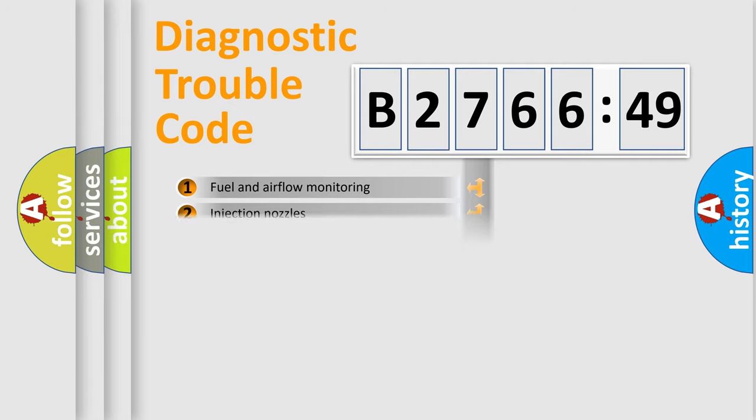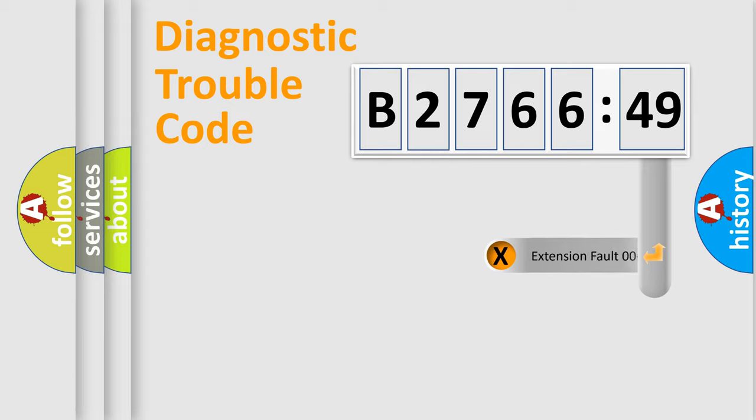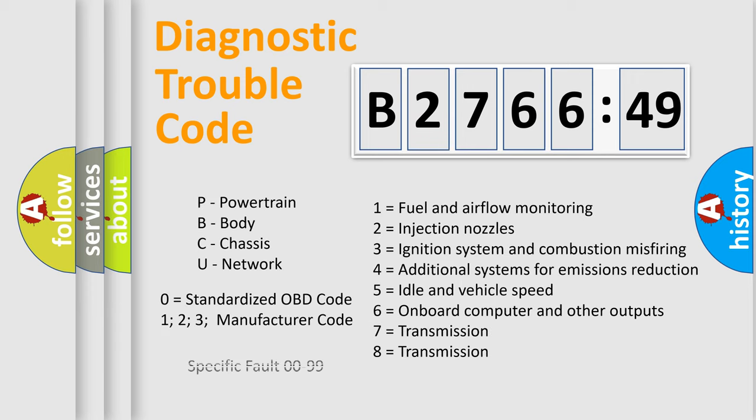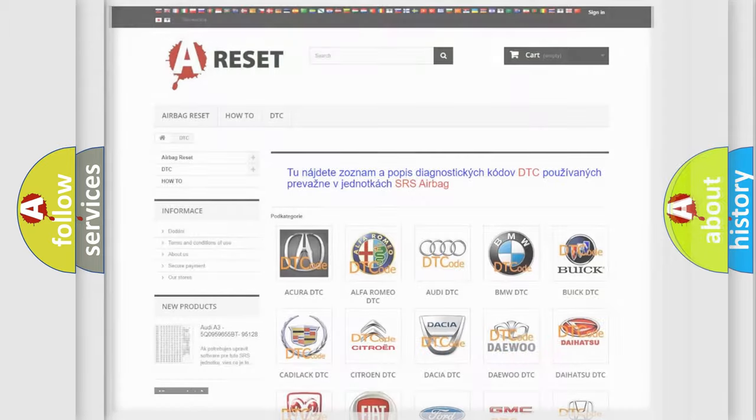The third character specifies a subset of errors. The distribution shown is valid only for the standardized DTC code. Only the last two characters define the specific fault of the group. The add-on to the error code serves to specify the status in more detail, for example, a short to the ground. Let's not forget that such a division is valid only if the second character code is expressed by the number zero.